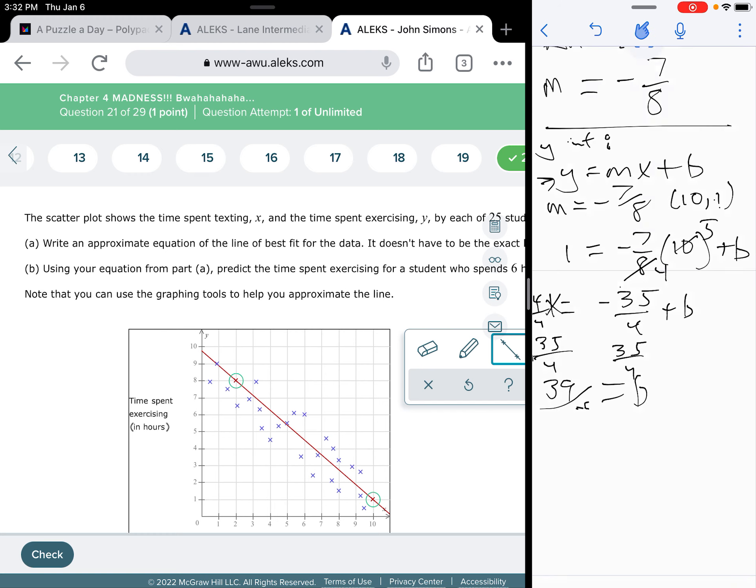So, my b is 39 fourths. So, now I know that m is negative 7 eighths and I know that b is 39 fourths. And so, my equation is going to be y equals negative 7 eighths x plus 39 fourths, which is almost 10.